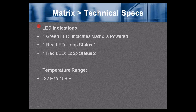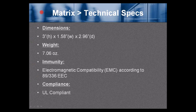Technical specs continued: LED indications — green LED indicates power, red LED for Loop A status, red LED for Loop B status. Temperature range is minus 22 to 158 degrees Fahrenheit.